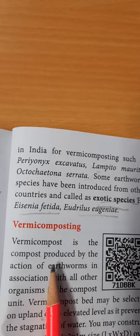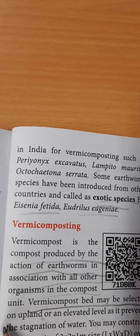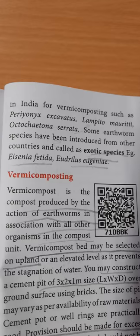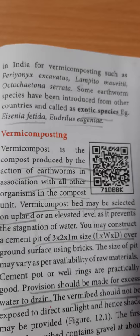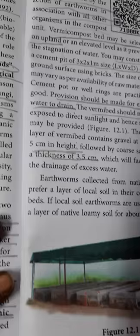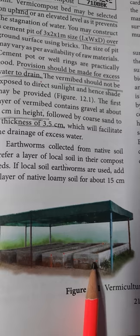Vermicomposting is the process produced by the action of earthworms in association with other organisms. Vermicomposting beds are selected with specific measurements, and different provisions are made for water drainage. The height and thickness of the bed material are very important. You can see the vermiculture setup here with different types of earthworms and the vermicompost produced.